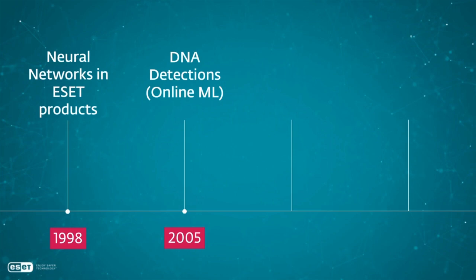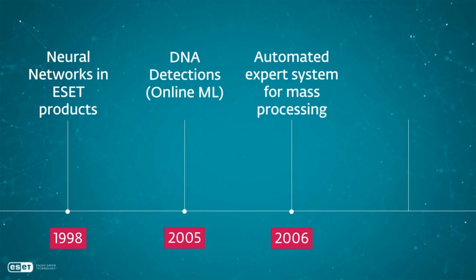In 2006, we realized we have so many new samples every day that our analysts are just overworked — it's too much for them to work on every day by hand. So we started to use machine learning also to process that mass of information. Our automated expert system was, in the beginning, maybe a little bit clumsy, but now, after all those years and training, it has become a very effective tool that our analysts are using.